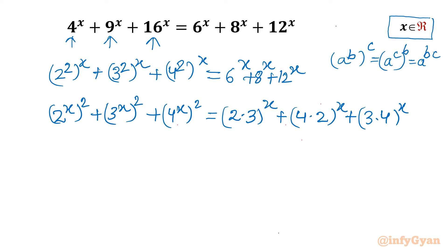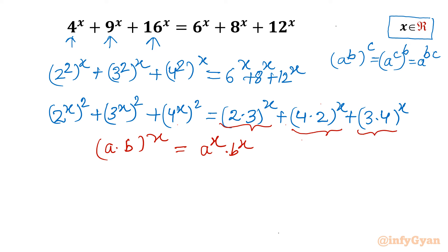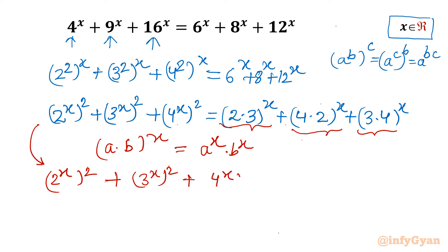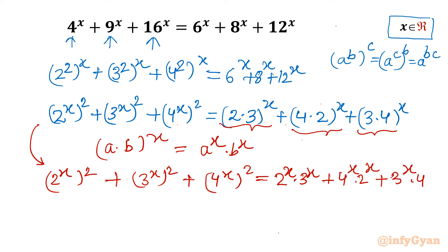Now using the exponent property (a·b)^x = a^x · b^x, I will apply this to the right-hand side. So the equation becomes (2^x)² + (3^x)² + (4^x)² = 2^x·3^x + 4^x·2^x + 3^x·4^x.